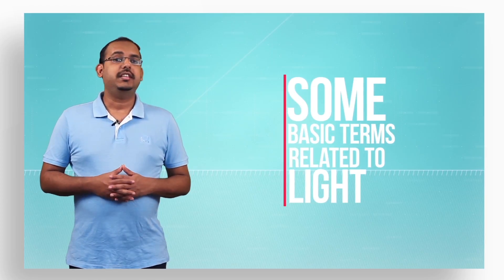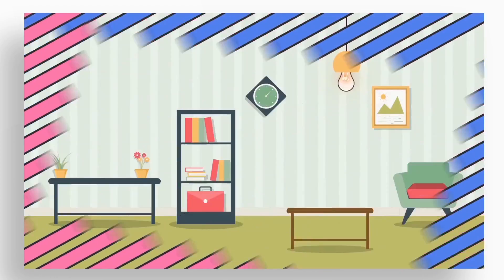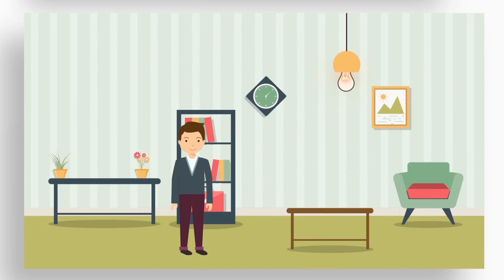Now let us dive into some of the basic terminology that is associated with the study of light and let's understand what these terms mean technically. In our last lecture we have seen that for us to be able to see the objects which are all around us, light reflected from these objects should reach our eyes.